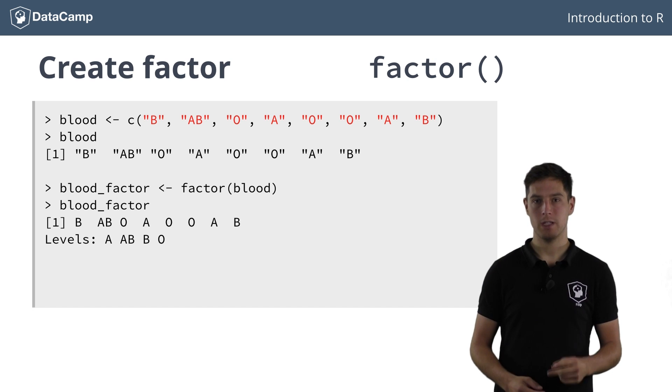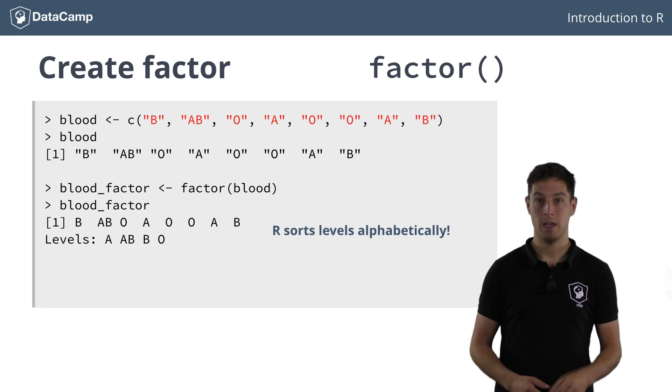R basically does two things when you call the factor function on the character vector. First of all, it scans through the vector to see the different categories that are in there. In this case, that's A, AB, B and O. Notice here that R sorts the levels alphabetically.